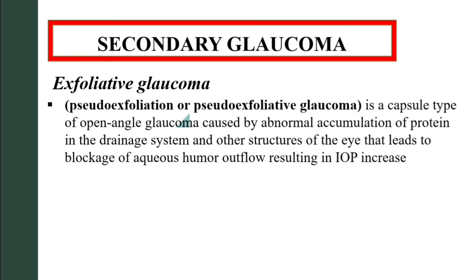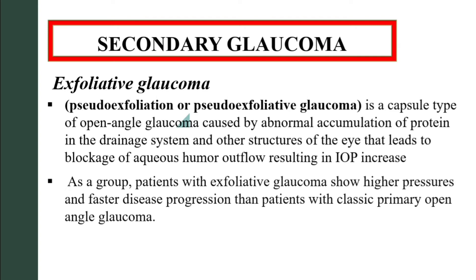The next type is exfoliative glaucoma, also known as pseudo-exfoliation or pseudo-exfoliative glaucoma. It is a type of open-angle glaucoma caused by abnormal accumulation of protein in the drainage system and other structures of the eye, leading to blockage of aqueous humor outflow and resulting in increased intraocular pressure. As a group, patients with exfoliative glaucoma show higher pressures and faster disease progression than patients with classic primary open-angle glaucoma.